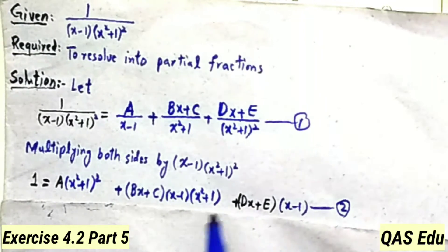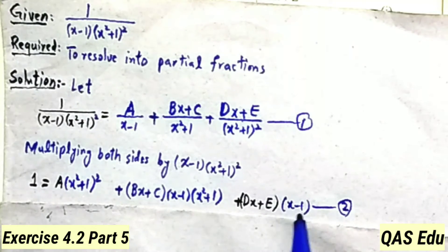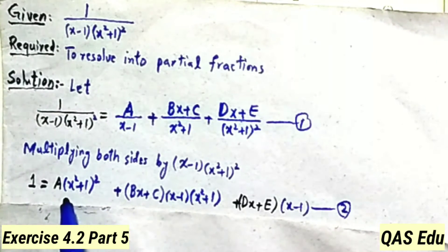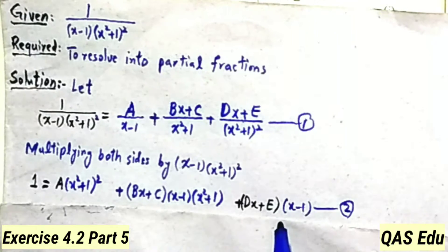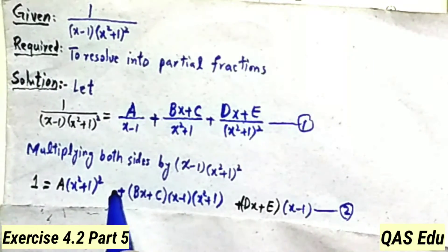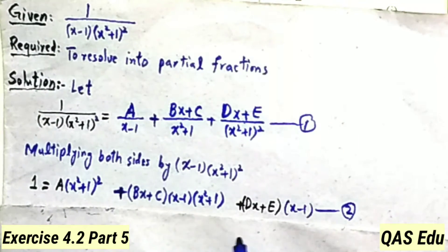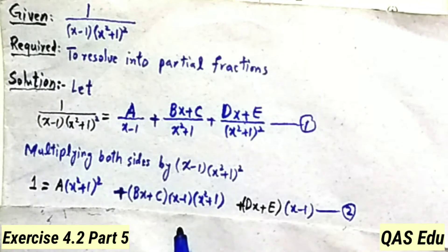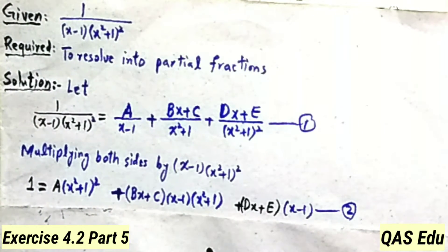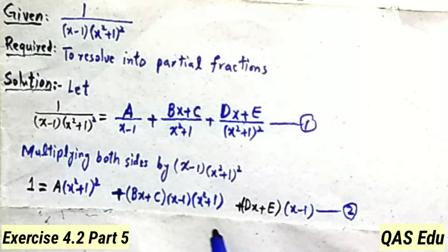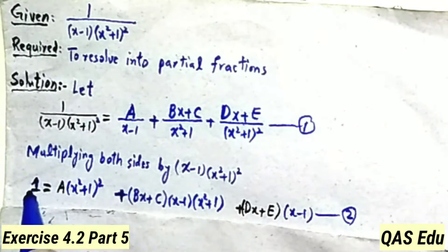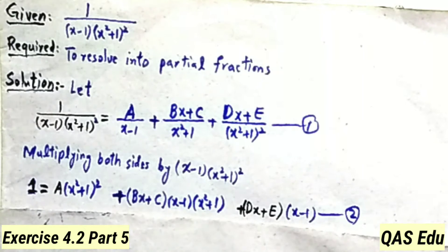From equation number 2, we put x equal to 1. When x equals 1, x minus 1 becomes 0, so terms with B, C, D, E vanish. Putting x equals 1: 1 minus 1 equals 0. We use the same power of x — x cube, x power 4, x square, x — and compare coefficients.